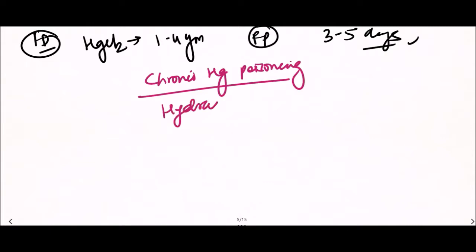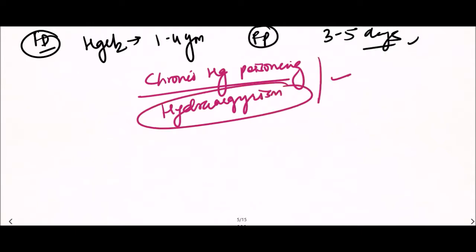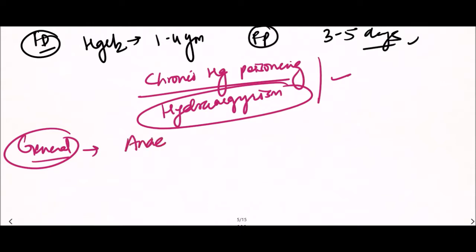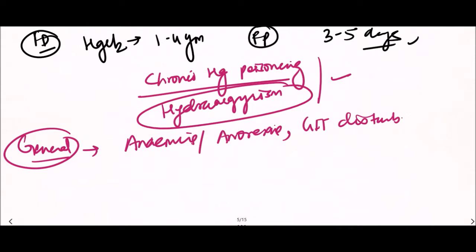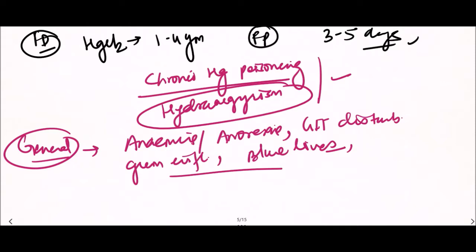Chronic mercury poisoning is also known as hydrargyrism. General signs and symptoms include anemia, anorexia, gastrointestinal tract disturbances, gum inflammation and gum bleeding, and formation of blue lines at the junction of gums and teeth.